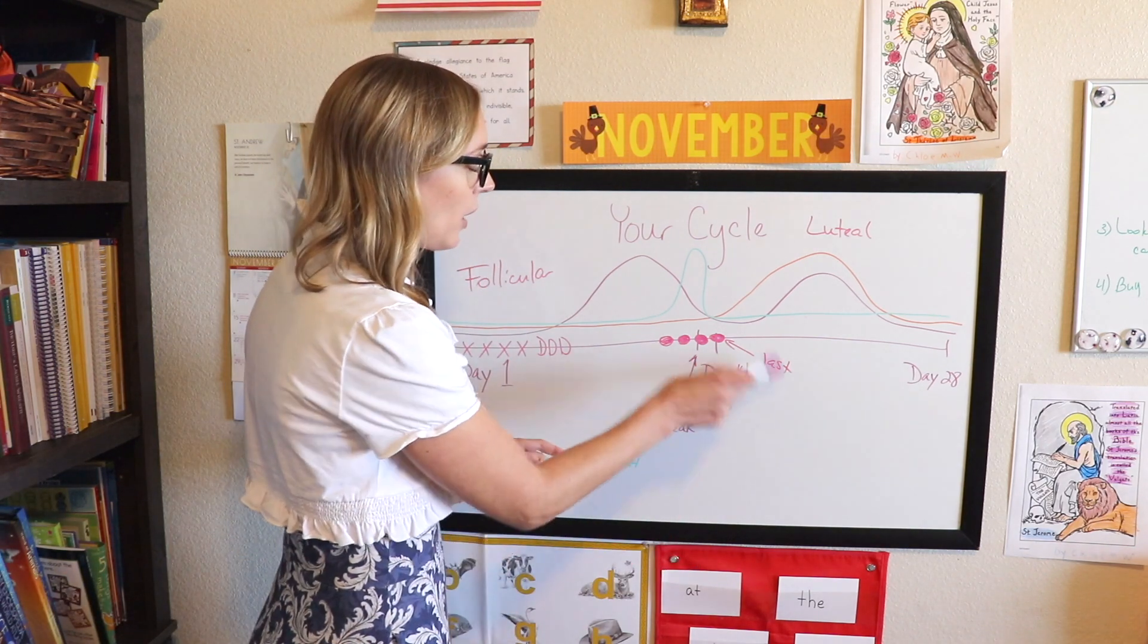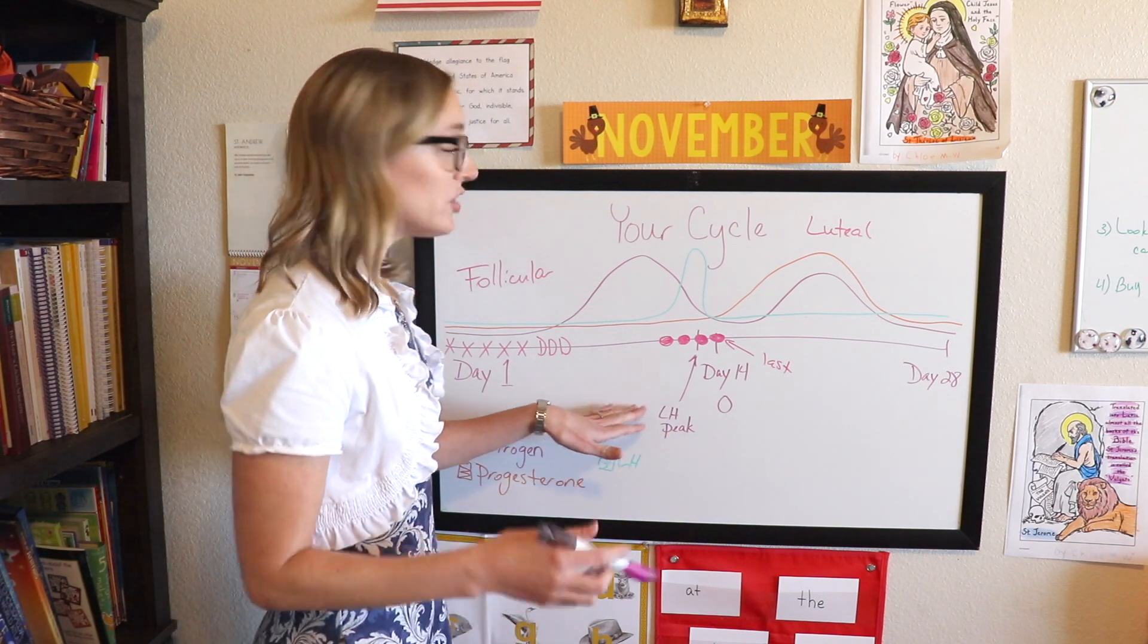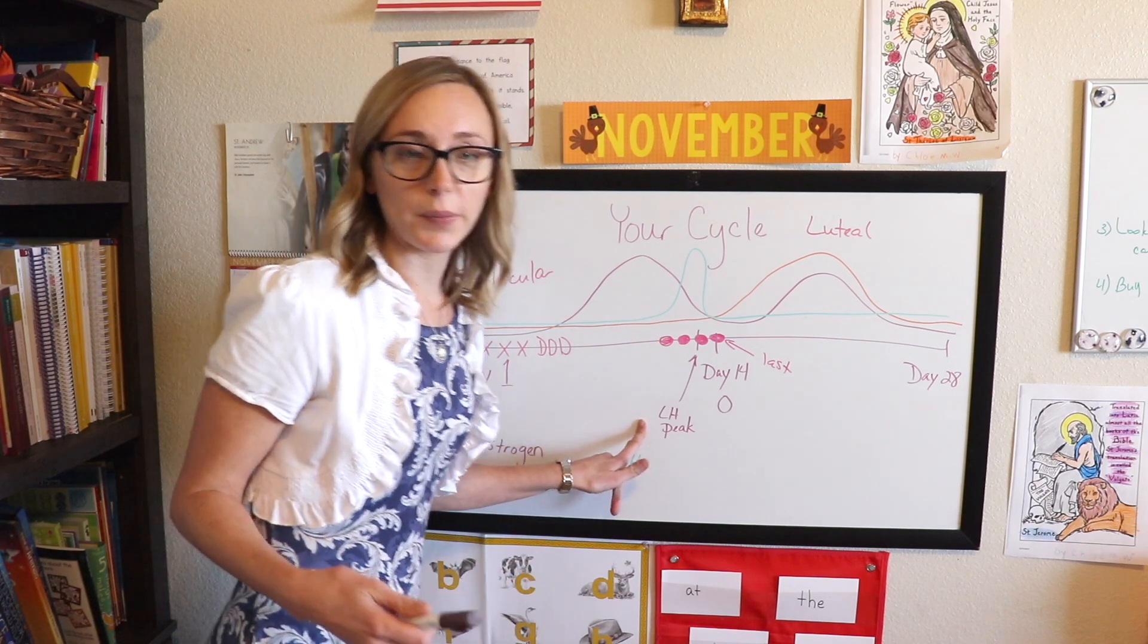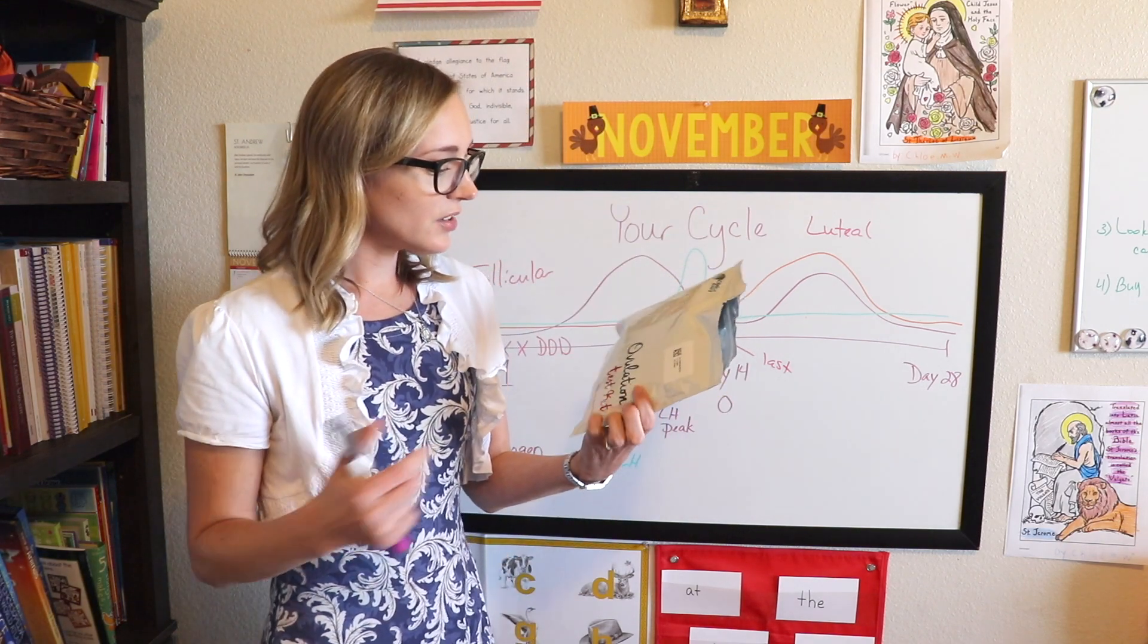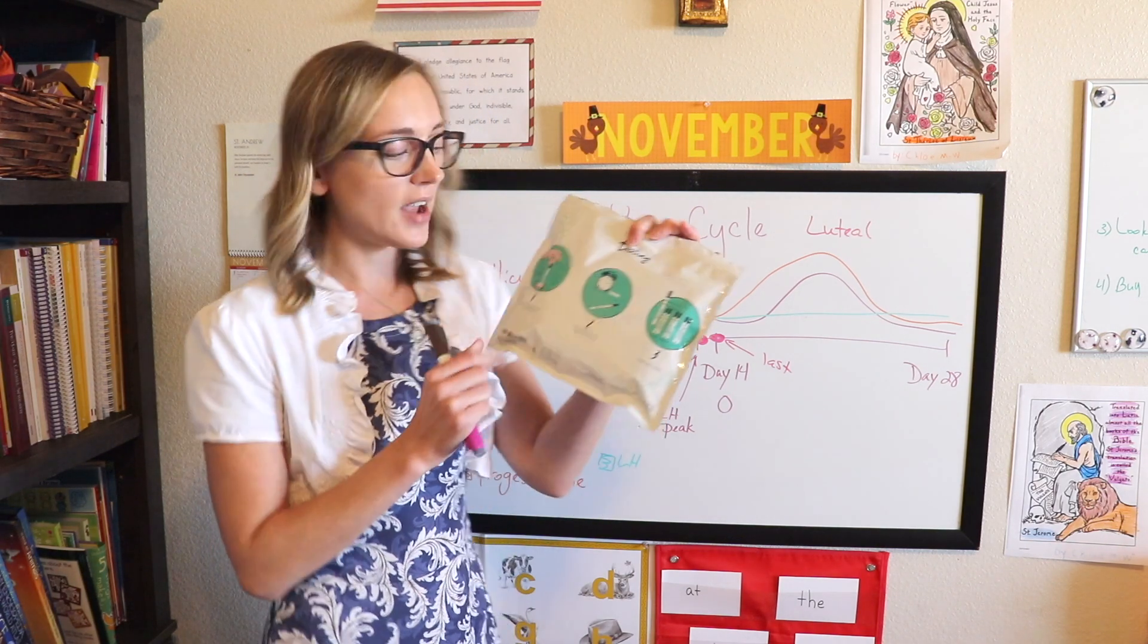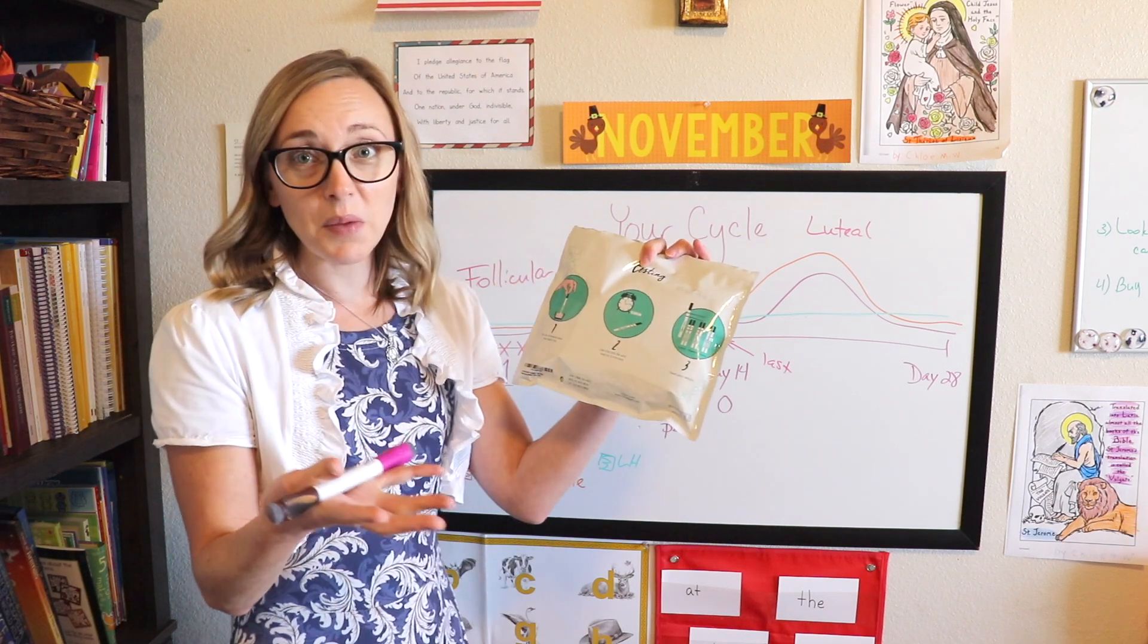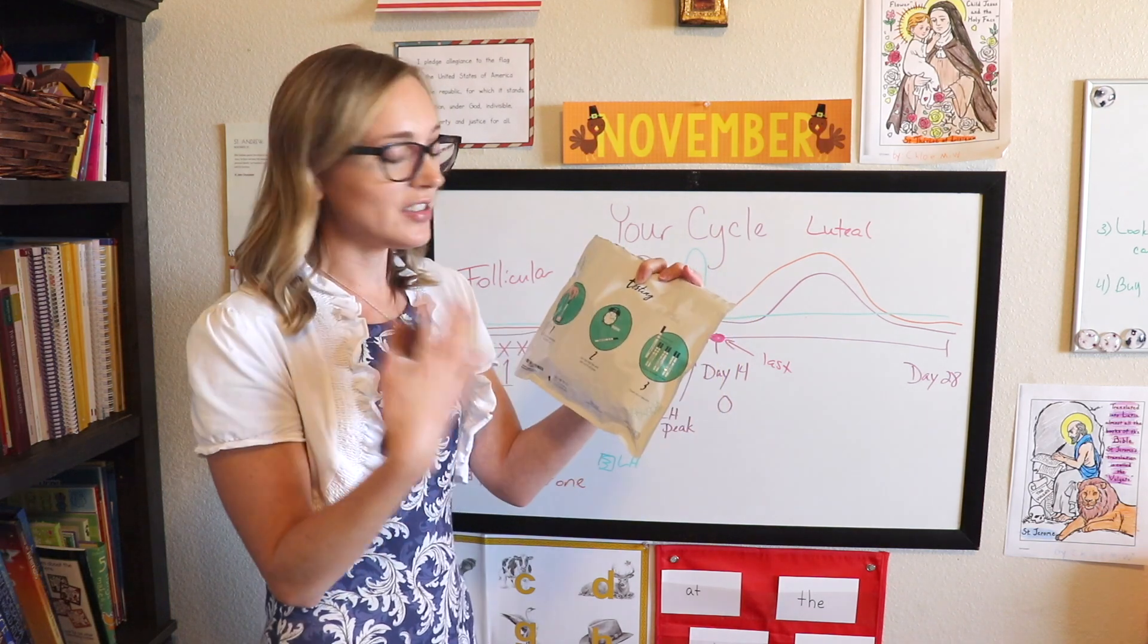And so we're going to talk about how to track your ovulation. But the first thing you're going to want to do, which is really helpful, even if you just want to understand your cycle, is to get some LH strips. These are the LH strips that I get. They're just called ovulation test kits by Clinical Guard. I'll link them down below, of course. And they're just these little tiny cheapy strips. And you would pee in a cup and then you dip it for three seconds. You wait the five minutes. It's just like a pregnancy test.